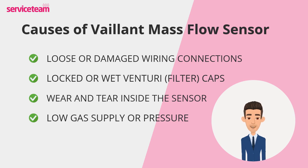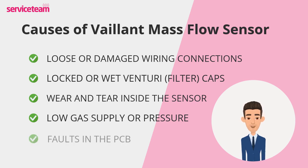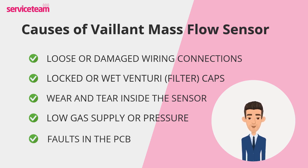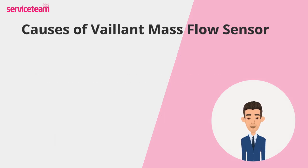The PCB relies on data from the mass flow sensor to control burner modulation. Faults in the PCB — such as software errors or component failure — can misinterpret the sensor signals. This can mimic a sensor fault and result in F52 or F53 error codes, requiring professional diagnosis to determine whether the sensor or PCB is at fault.